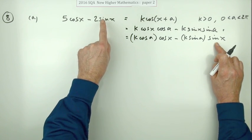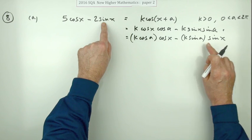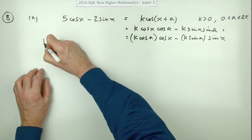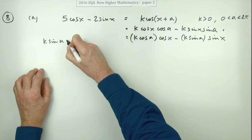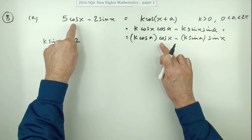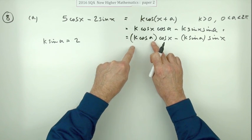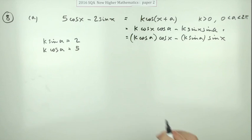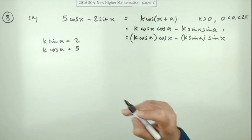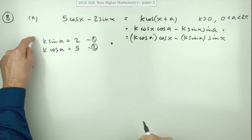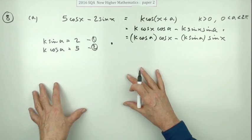I'll equate the sin ones first. If these sin terms are meant to be the same, it means negative k sin a is meant to be negative two, or put simply k sin a equals two. Similarly, if these two cos terms are meant to be the same, then k cos a must equal five. Stating this gets you the second mark.